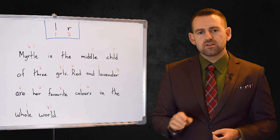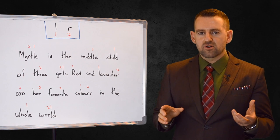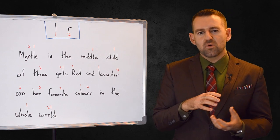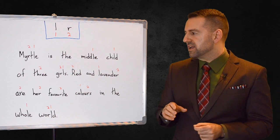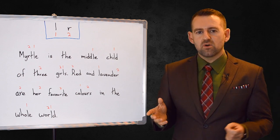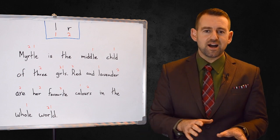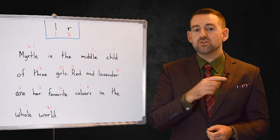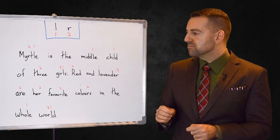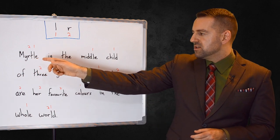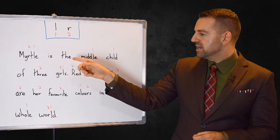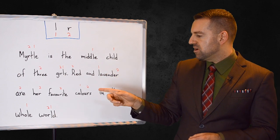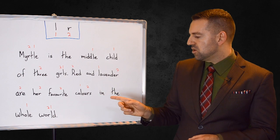Myrtle, so Myrtle is the name of a woman or a girl. Well, actually, it's not very common nowadays. It's a very old-fashioned woman's name. So maybe don't name your daughter Myrtle or maybe some of her friends at school will laugh at her. This would be a woman's name one or two hundred years ago. So it's a very old-fashioned name. So, Myrtle. Myrtle is the middle child of three girls. Red and lavender are her favorite colors in the whole world.